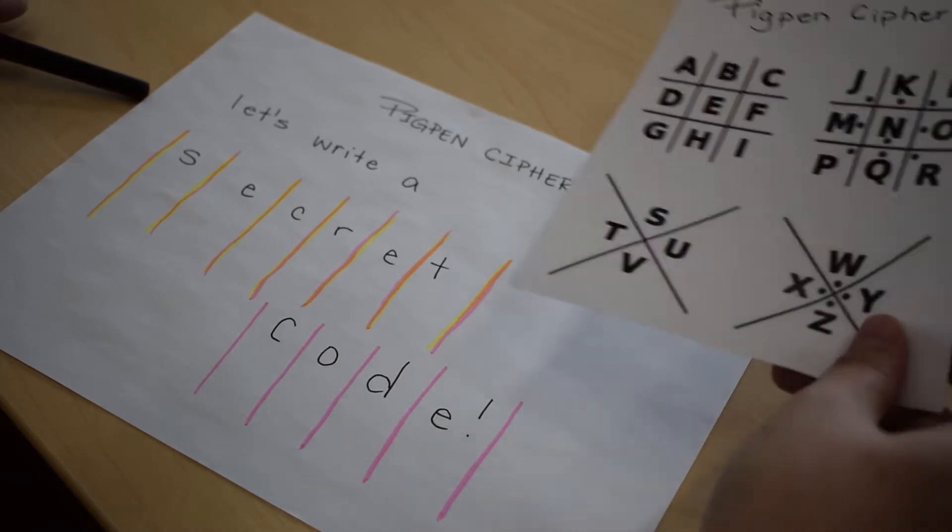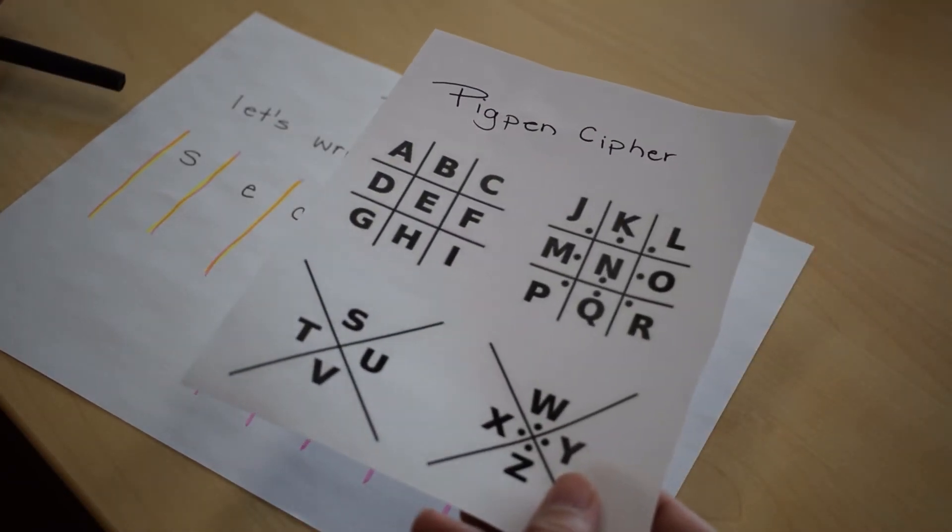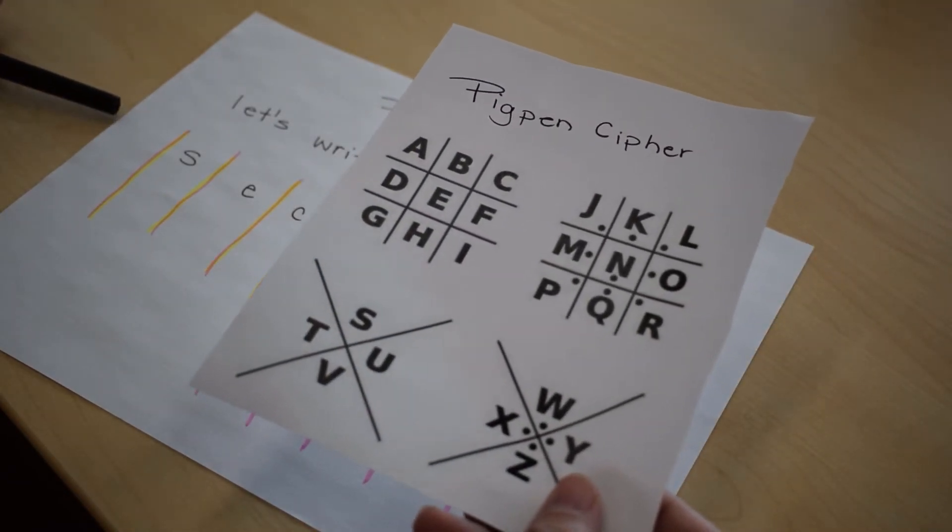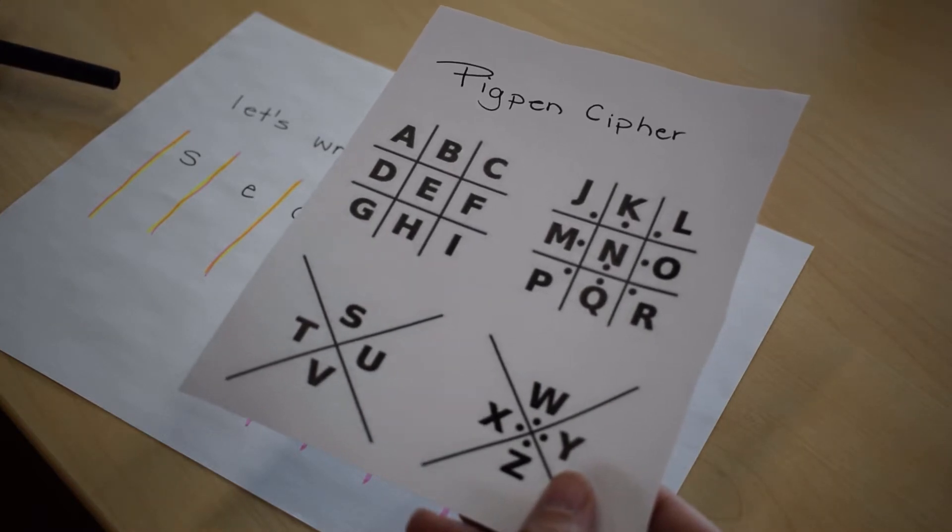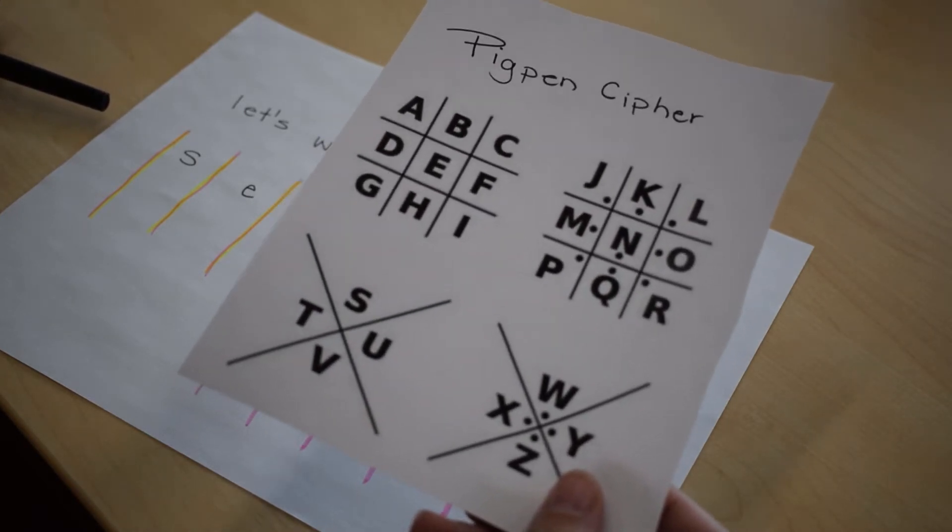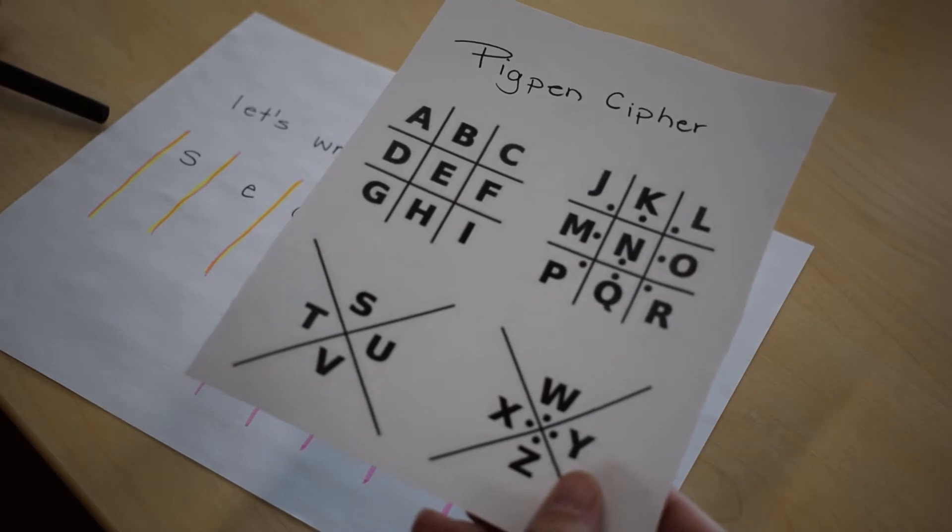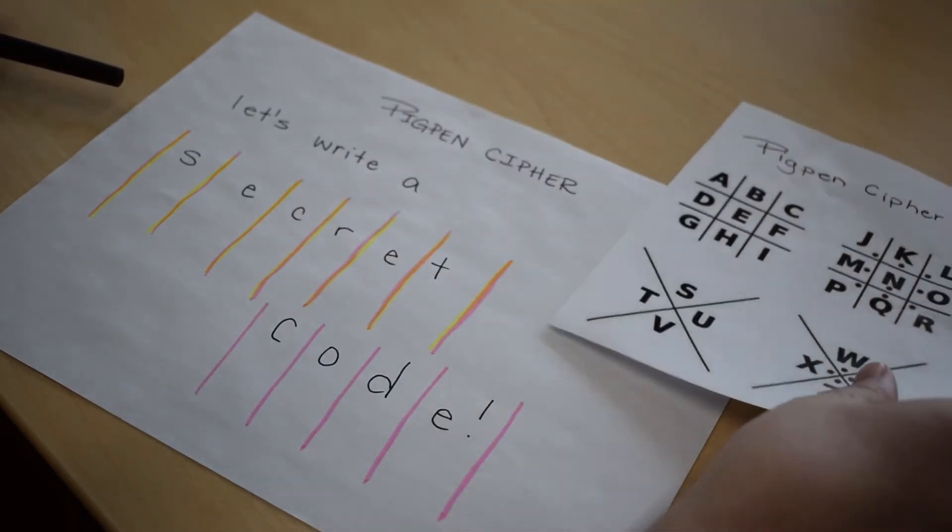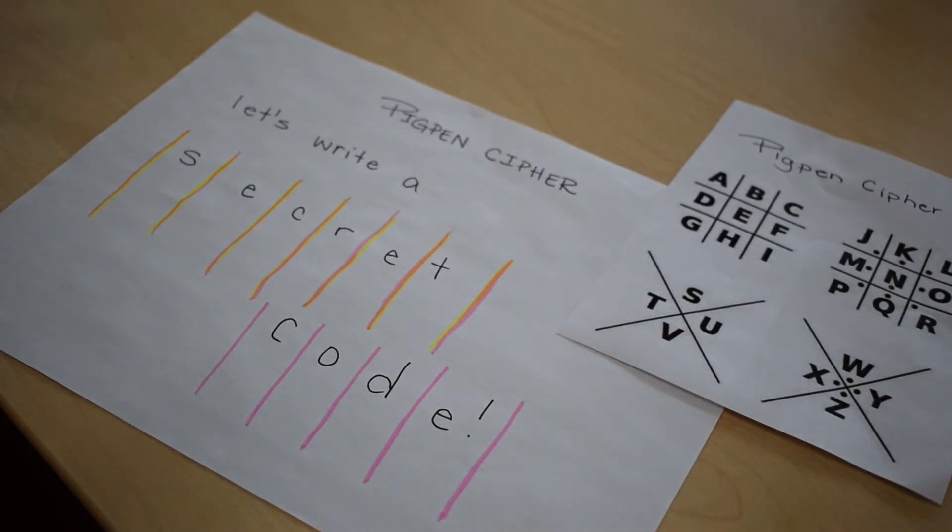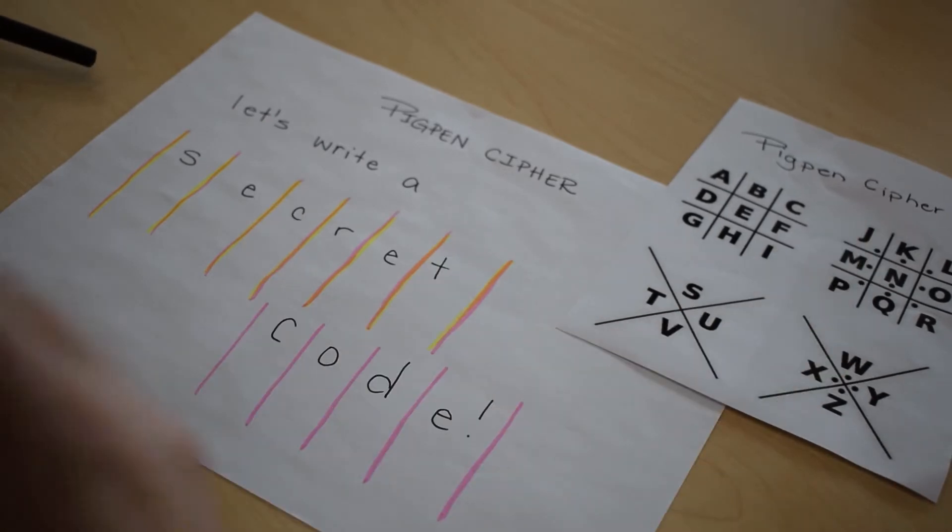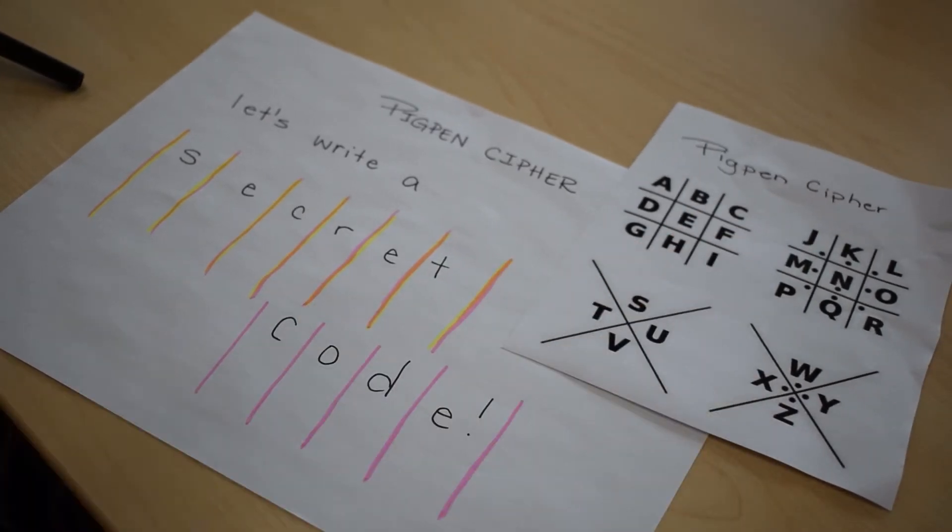The first one is a key, and in this case this is our pigpen cipher key. I'll put a link down below if you want to find it easily. If you think about a lock and a key, this unlocks our secret message. The second part is an algorithm. An algorithm is a word that means a set of instructions. So I have my key and I need a set of instructions of how to use this key to write and uncover my secret message.